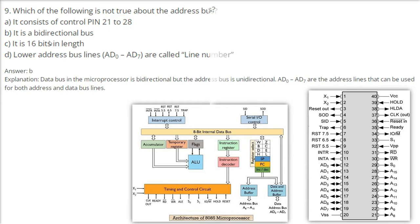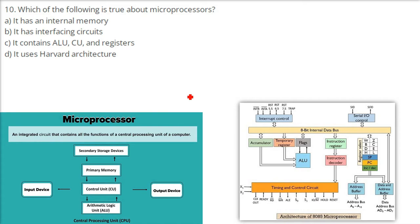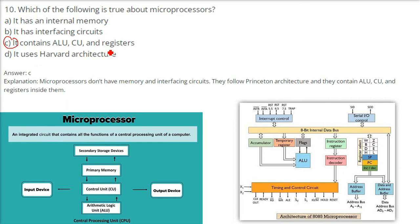Which of the following is true about microprocessors? A microprocessor is an integrated circuit that contains all the functions of the central processing unit of a computer. The answer is C — it contains the ALU (Arithmetic Logic Unit), CU (Control Unit), and registers. Microprocessors don't include memory; they follow the Princeton architecture and contain the ALU, control unit, and registers B, C, D, E, H, L, W, Z.